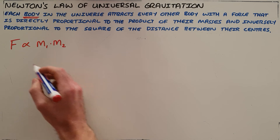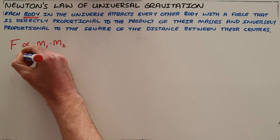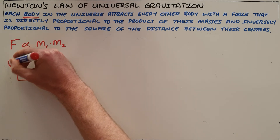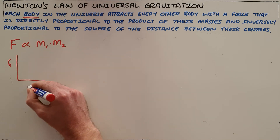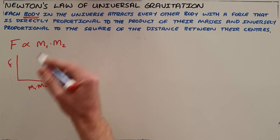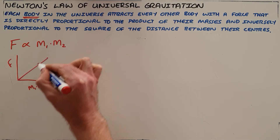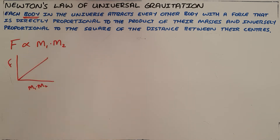This tells us that as the masses of two objects increase, the force between those two objects would also increase. A direct proportion means that as the product of the masses increases, so does the force.